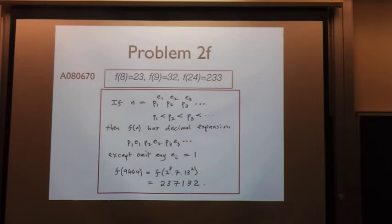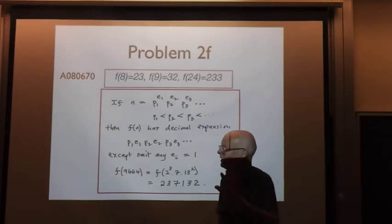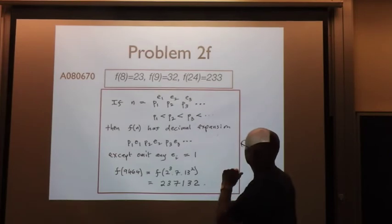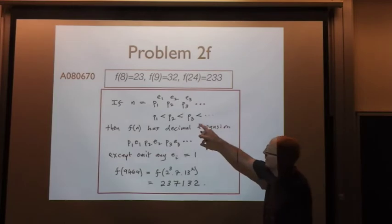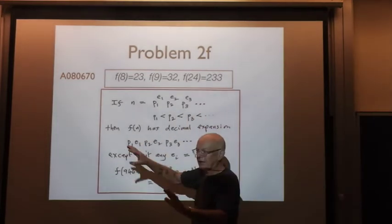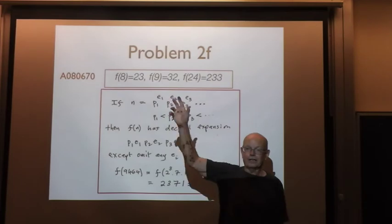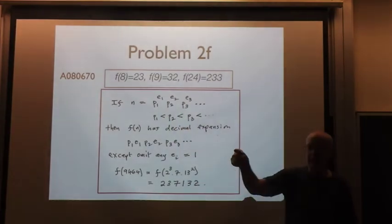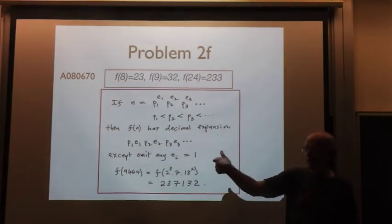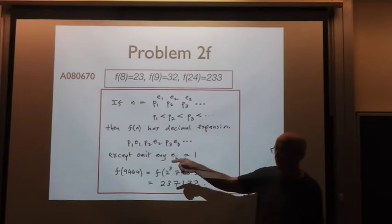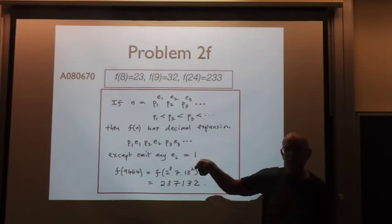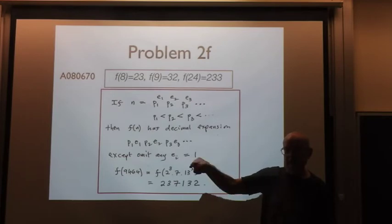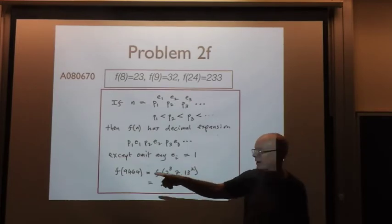So there's one more important map — problem F. The map I'm now looking at sends 8 to 23, because 8 is 2 to the power 3. So 8 goes to 23. 9 is 3 squared, so 9 goes to 32. 25 goes to 52. 52, which is 4 times 13 = 2 squared times 13, goes to 2213, which is a prime — and it stops.